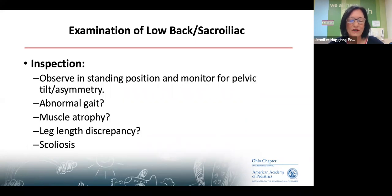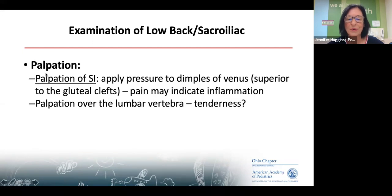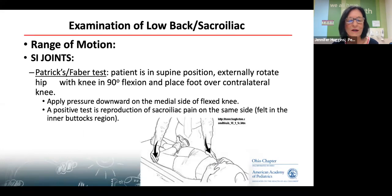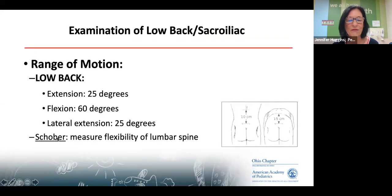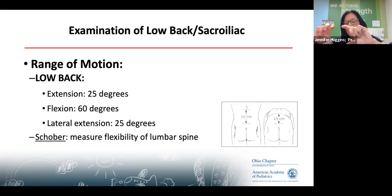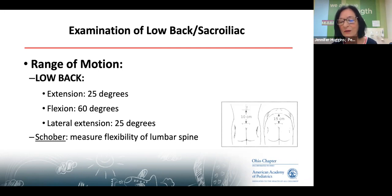The Patrick's test or figure-four: Shannon demonstrates this in the video. For the Schober test, mark right at the sacroiliac dimples and then 10 centimeters above. Ask them to bend forward — you're looking for the normal lumbar lordosis and that it extends five centimeters or more. The most important thing is to watch Shannon demonstrate these.